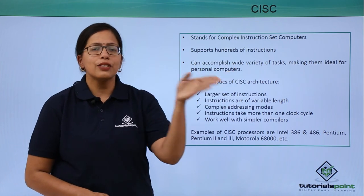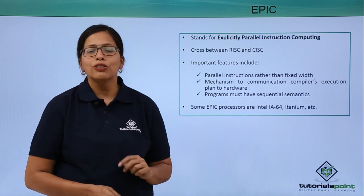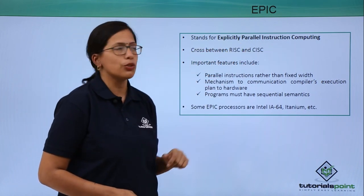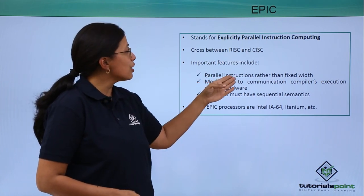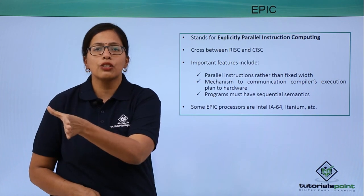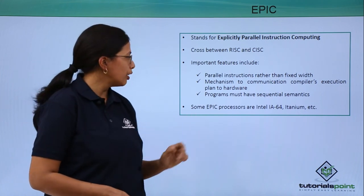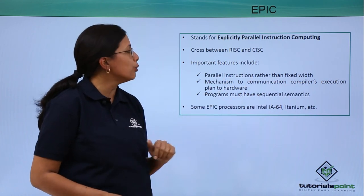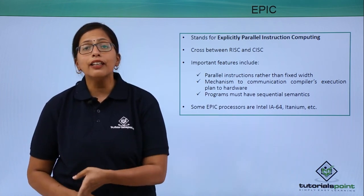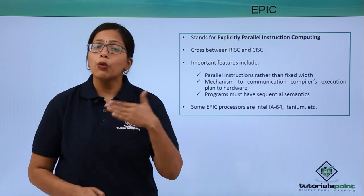RISC and CISC are very different from each other and both have their own advantages and disadvantages. So scientists tried to make a cross between the two, and what they came up with is EPIC — Explicitly Parallel Instruction Computing. EPIC essentially uses parallel instructions rather than fixed-width instructions, meaning it's not restricted to only 4-bit, 8-bit, or 16-bit instructions — some instructions can be 4-bit, some 64-bit, some 32-bit. It also provides a mechanism to communicate the compiler's execution plan to the hardware, allowing the hardware to optimize its other functions accordingly, making EPIC more optimized and performance-friendly.